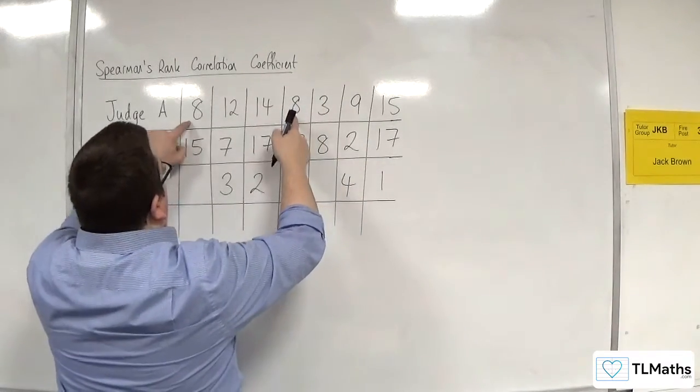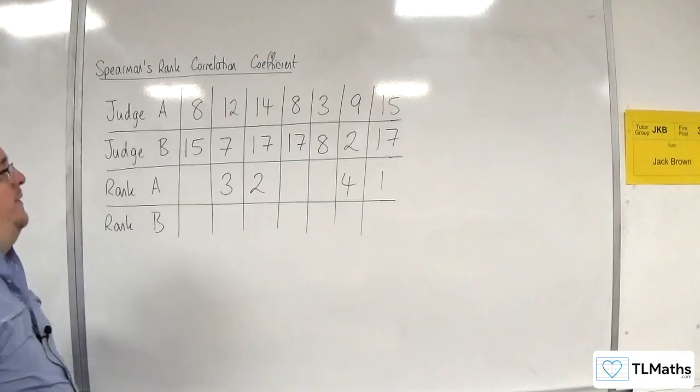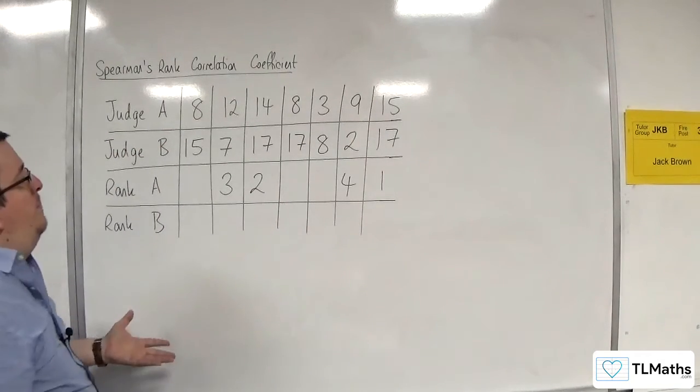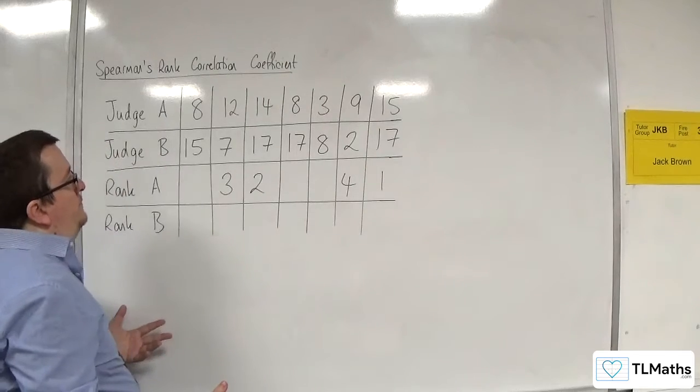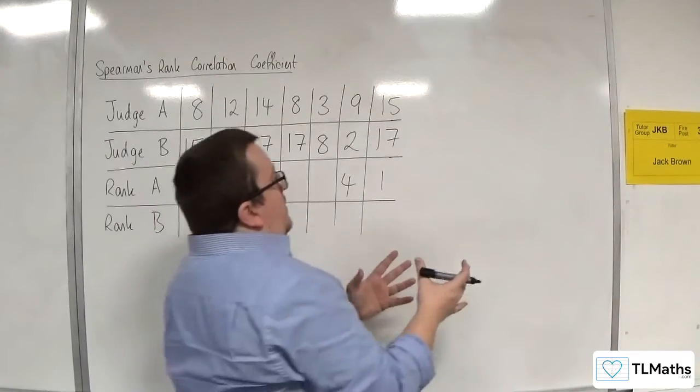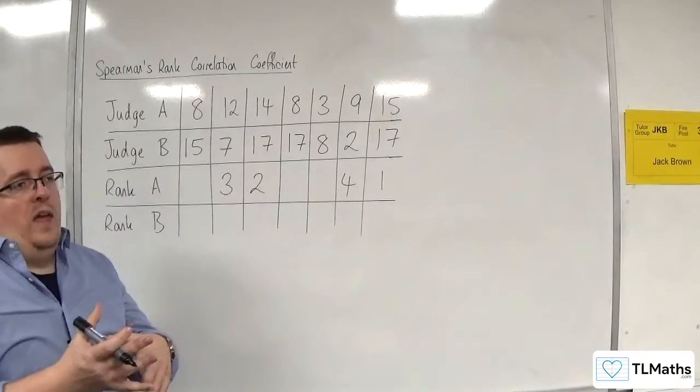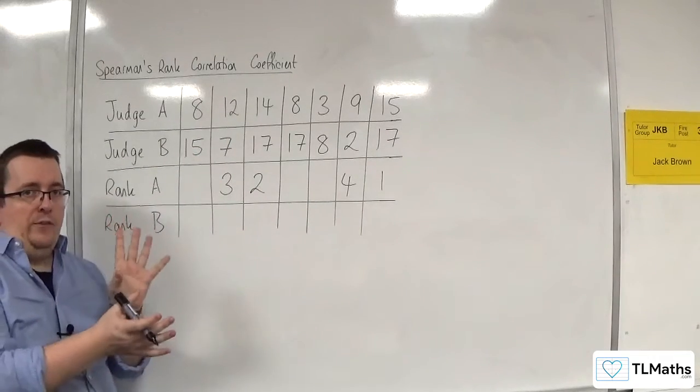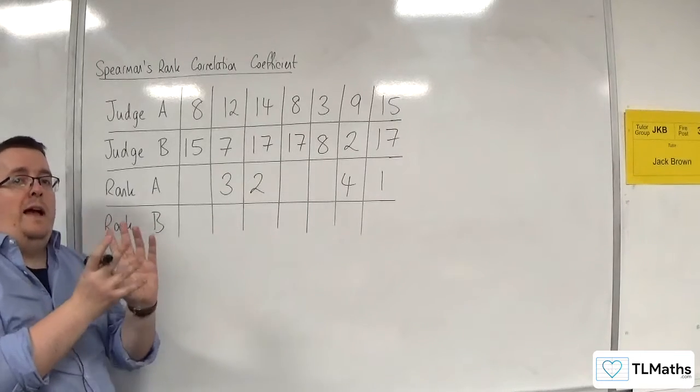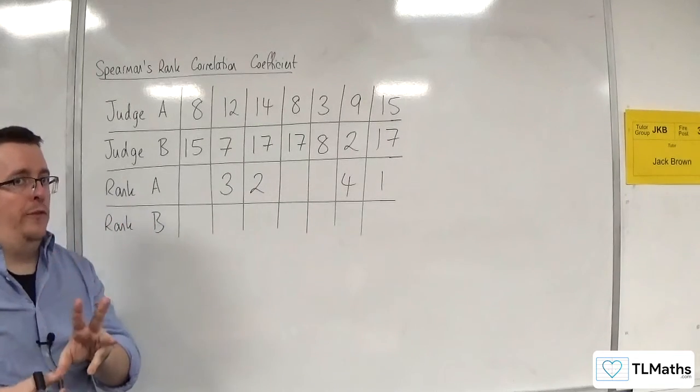And then we've got these two. They both have been given the same score. So, do they both get 5? What I want you to think about here is that if you have two people who got exactly the same score, I want you to imagine that they got slightly different scores.